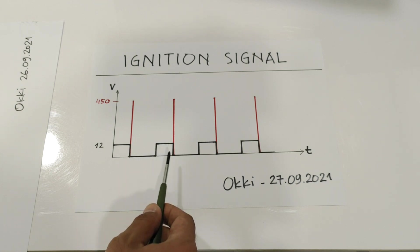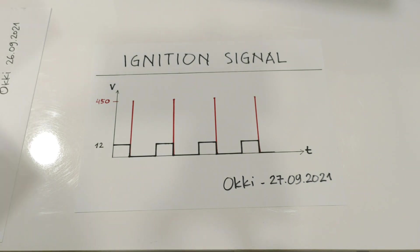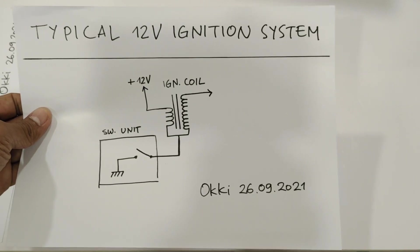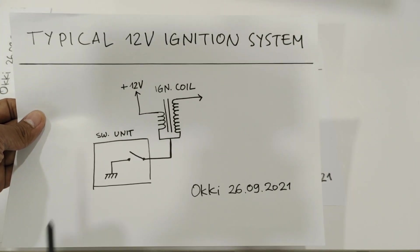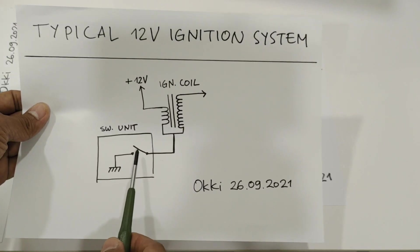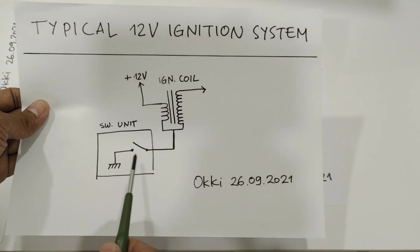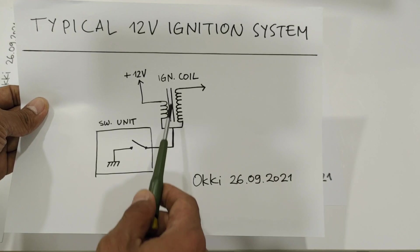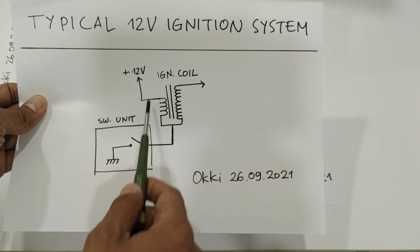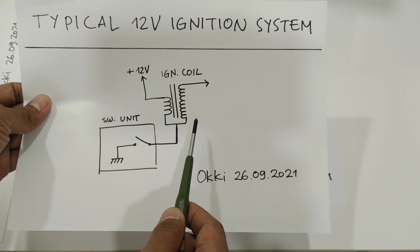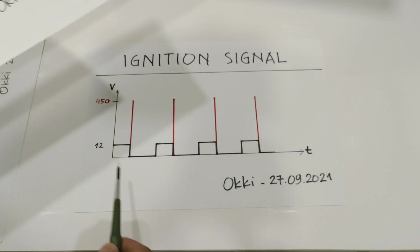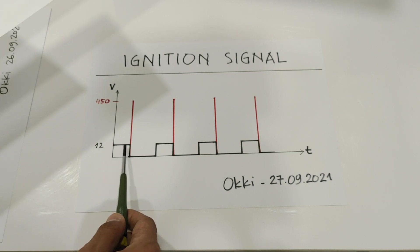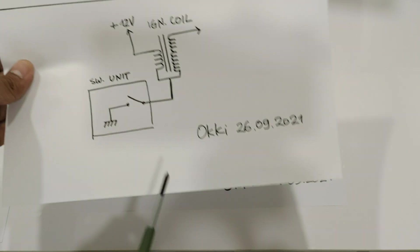If the switch is closed, the coil will be charged with 12V, and then at the time the switch is open we will get the spark at the spark plug.